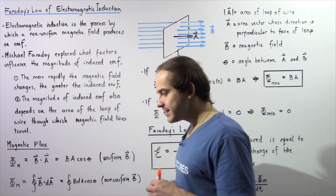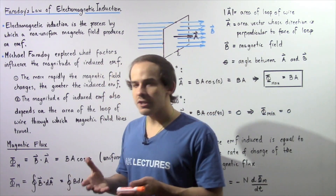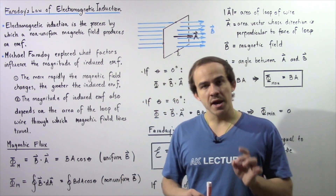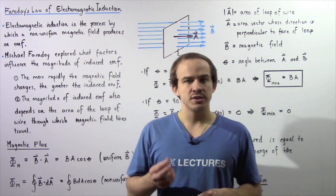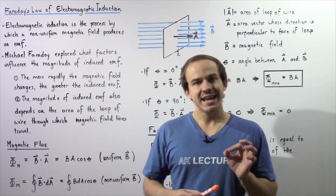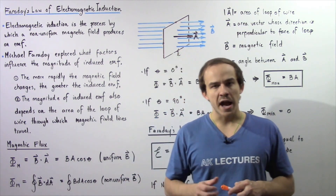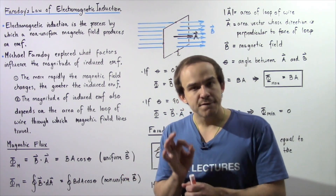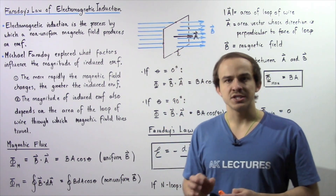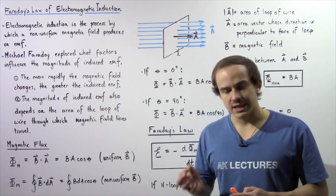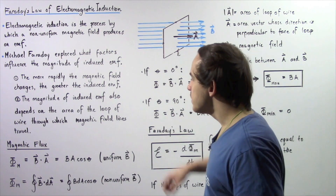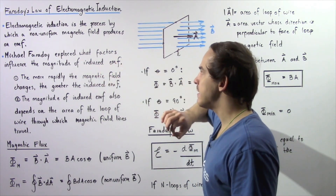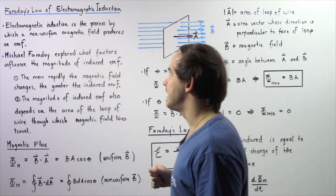There are two scientists who are credited for discovering this concept at the same time independently. One scientist was the American by the name of Joseph Henry, and the second scientist was an Englishman by the name of Michael Faraday. Michael Faraday further explored the factors that essentially influence the magnitude of this induced EMF, and was able to show that there are two factors that influence the magnitude of induced EMF produced by a non-uniform magnetic field.